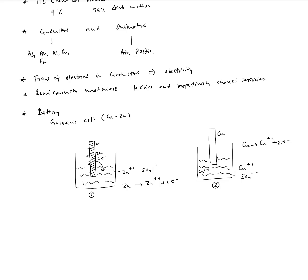After a while this reaction would stop because there would be an abundance of electrons on the zinc electrode and a lot of positively charged zinc ions in the solution — the two would want to remain close to each other, preventing further reaction. However, if you connect the zinc electrode and the copper electrode via a conducting wire, the electrons have found a path to travel from the zinc electrode to the copper electrode.